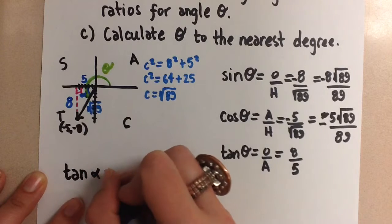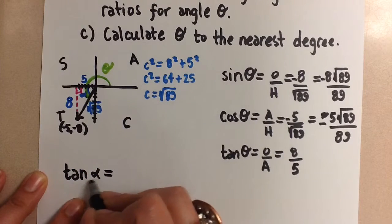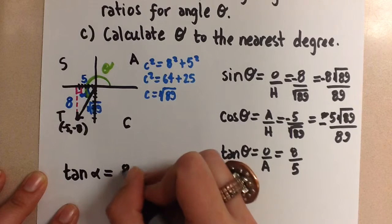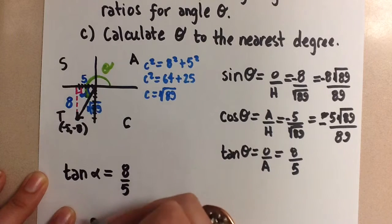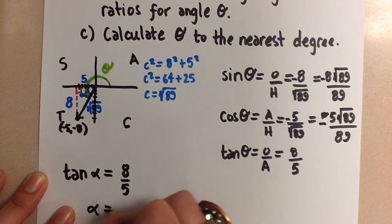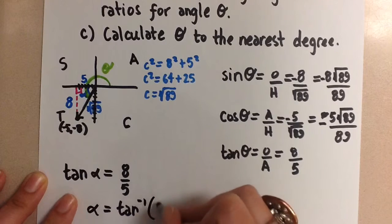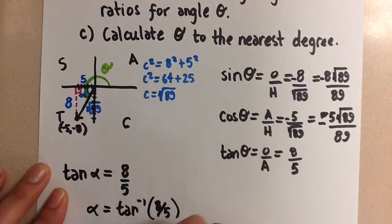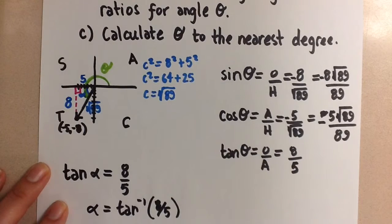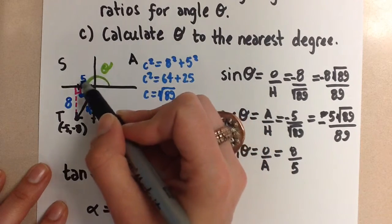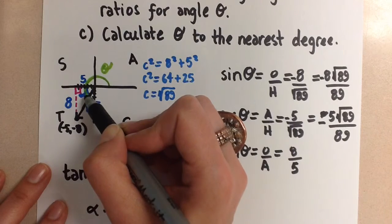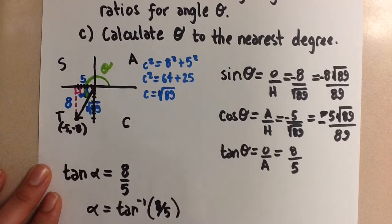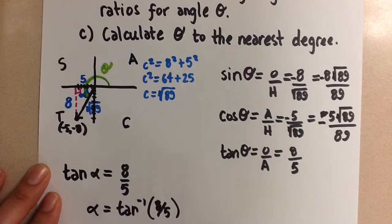Let's use the tangent. So the related acute angle there, we're calling alpha. Tangent of alpha was 8 over 5. So to find the value of alpha, we do the inverse tangent of 8 over 5. If you plug that into your calculator, you're going to get alpha of 58 degrees. We want the value of theta, which is that principal angle that comes around like this. So to find that theta, we're going to do 180 degrees plus 58 degrees.